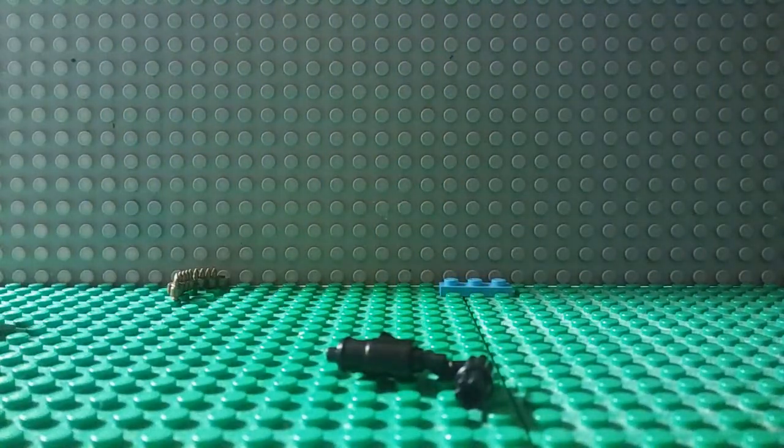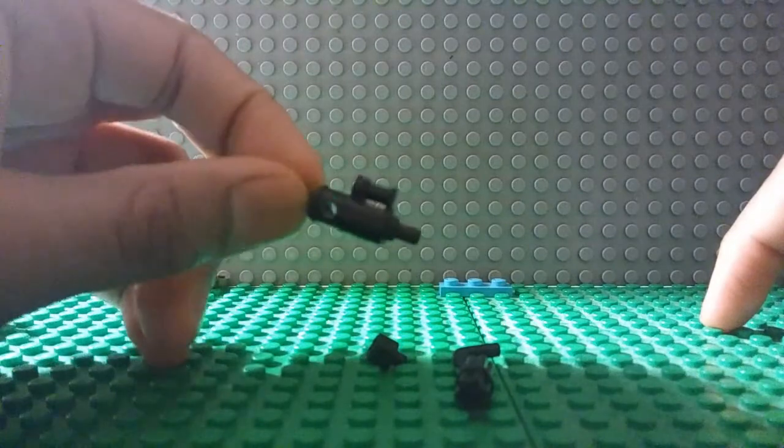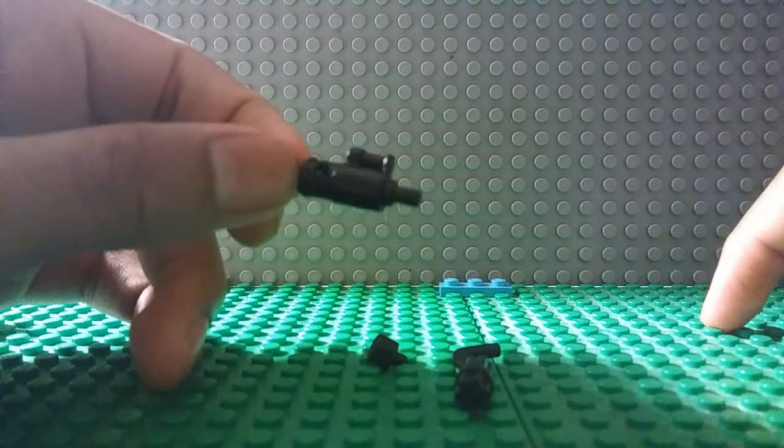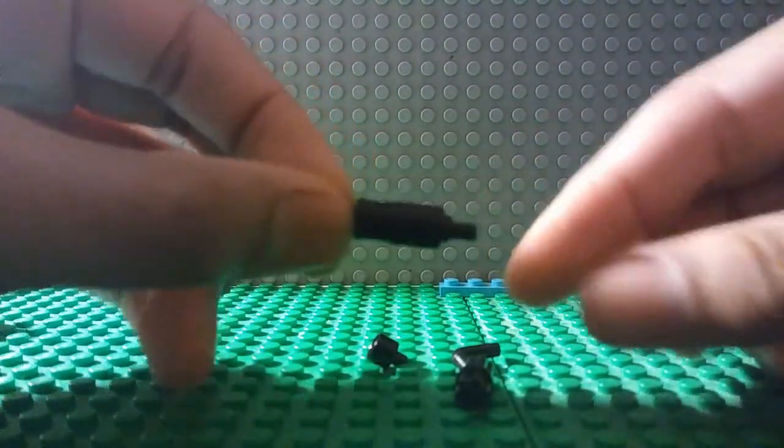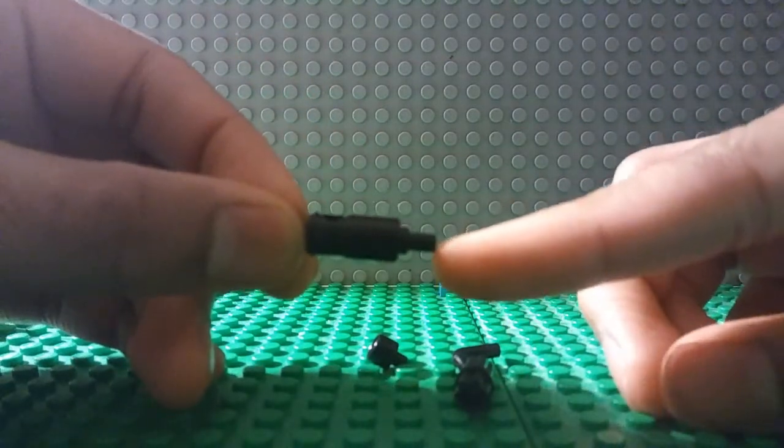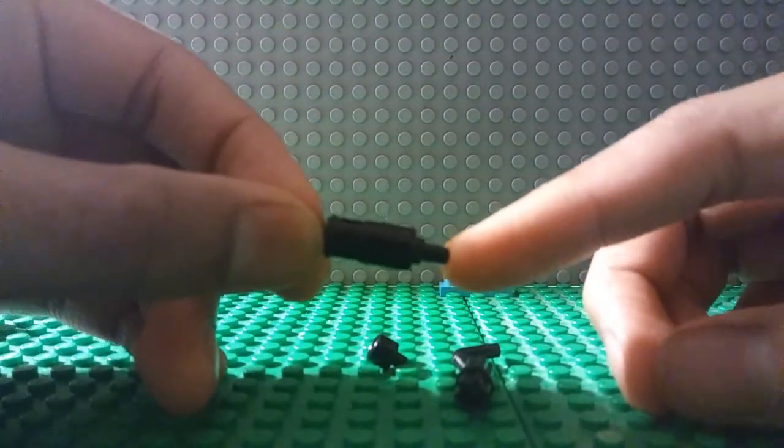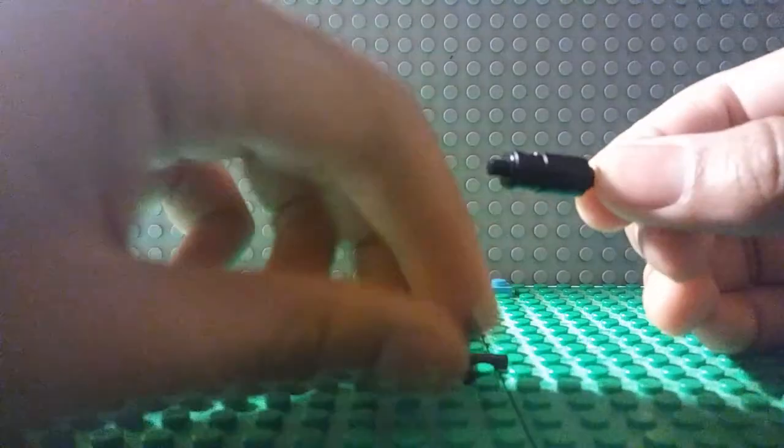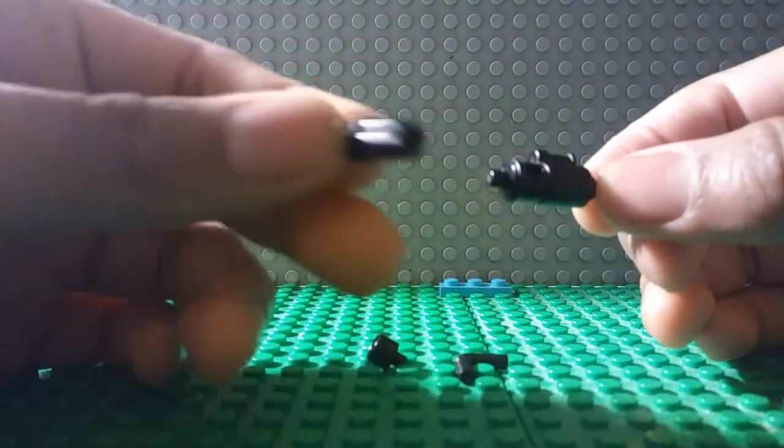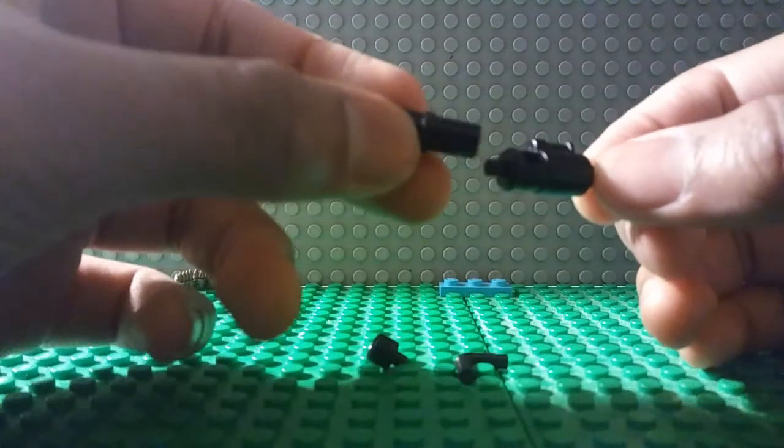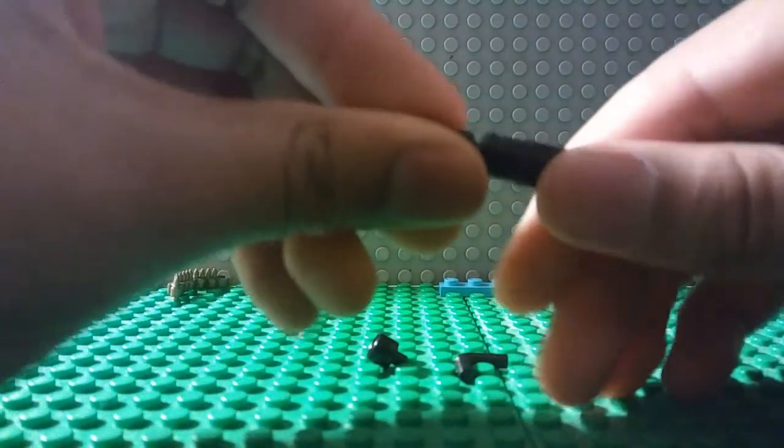So you're going to need the Minigun battery part. The long part is where you hold it, and the short part is where you put the spinning part of the Minigun. So you put the spinning part just like this.